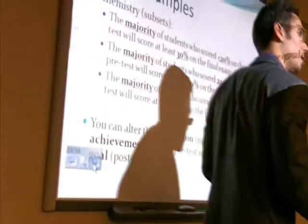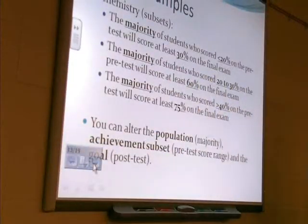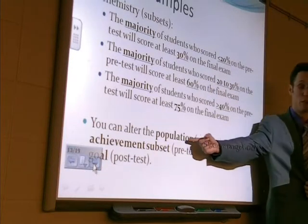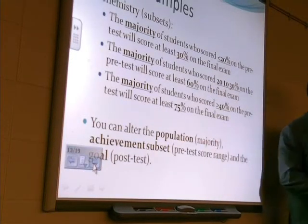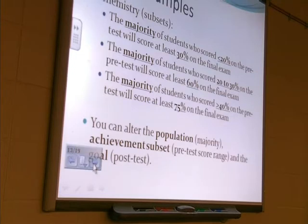And here are some examples. Specifically, what you want to alter in your student learning target are these three factors. First and foremost, you have the population. You could say that half of your class, the upper half or the lower half, is going to do something. Then you just pick the standardized test you want to use to make sure it's consistent, and you set that goal.